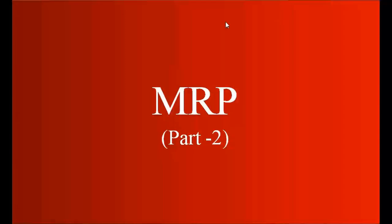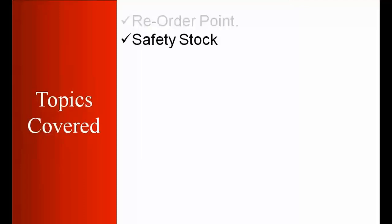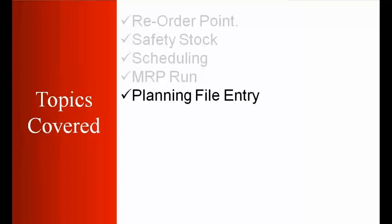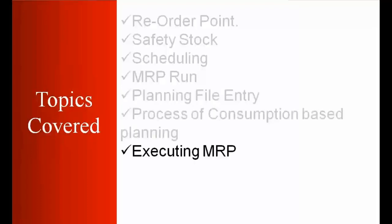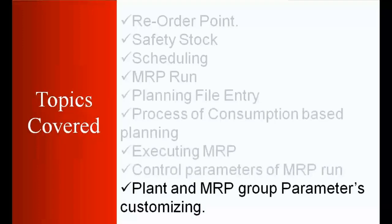Today we will be starting with the second part of MRP. The topics we will be covering are: what is the order point, safety stock, scheduling, MRP run, planning file entry, process of consumption-based planning, how to execute MRP, and control parameters for MRP run and plant and MRP group parameters customizing.